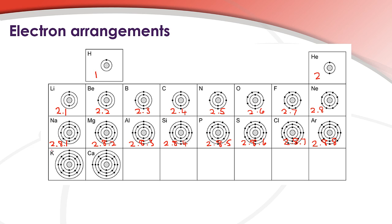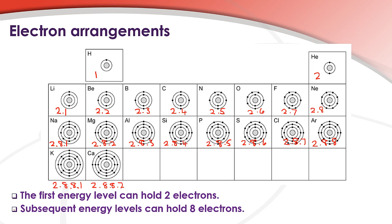We start with potassium which is 2.8.8.1 and then the final one calcium 2.8.8.2. So to summarize, the first energy level can hold two electrons, subsequent energy levels can hold eight electrons.